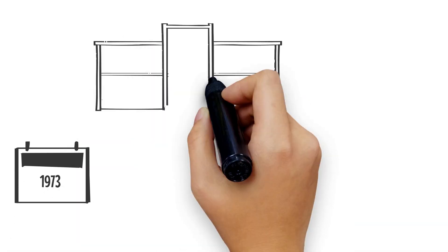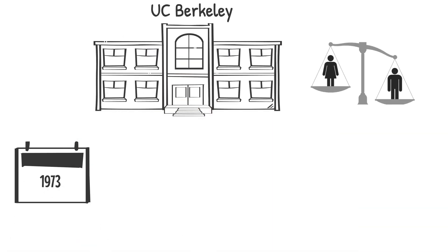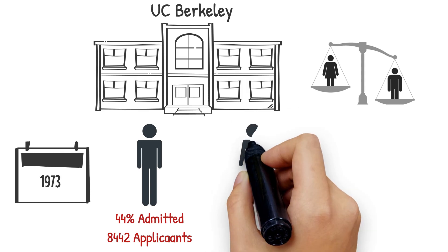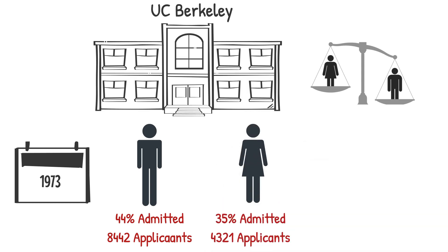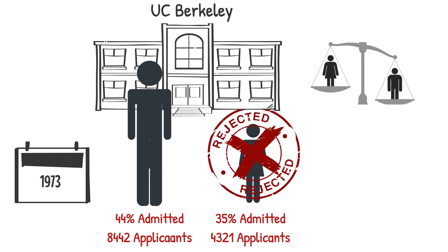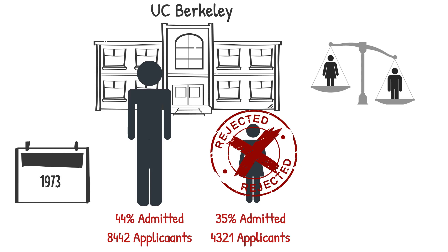In 1973, UC Berkeley was accused of sex discrimination, because out of all men who applied, 44% got admitted, and out of all women who applied, only 35% got admitted. This huge difference in admission percentage between men and women was unlikely to be due to chance. We are in front of a clear women discrimination case.